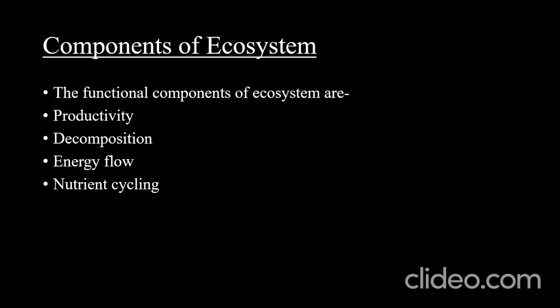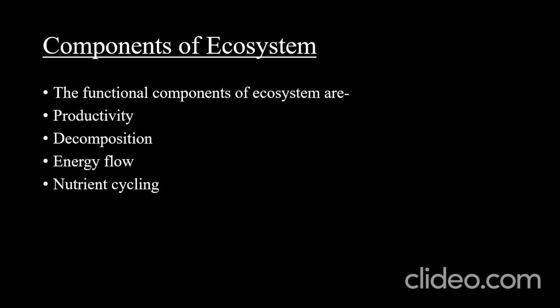The functional components of an ecosystem are productivity, decomposition, energy flow, and nutrient cycling. Productivity means the amount of biomass — the dry weight of living organisms — present in an ecosystem. Decomposition is a process in which complex organic matter is broken down to form simple inorganic matter. Energy flow implies how energy flows to different organisms in an ecosystem, and nutrient cycling means the cycling of nutrients through the different components of an ecosystem.